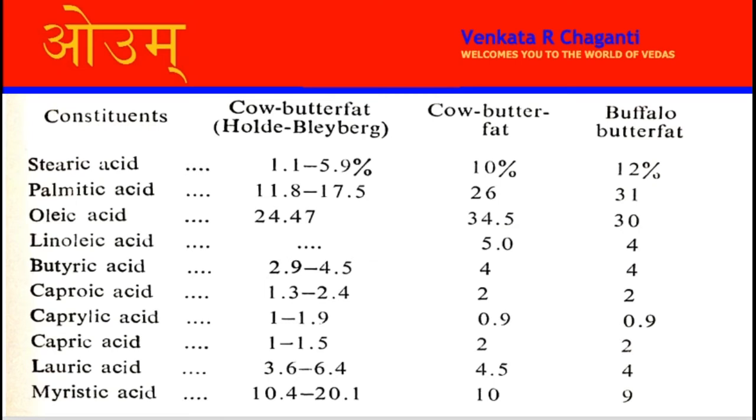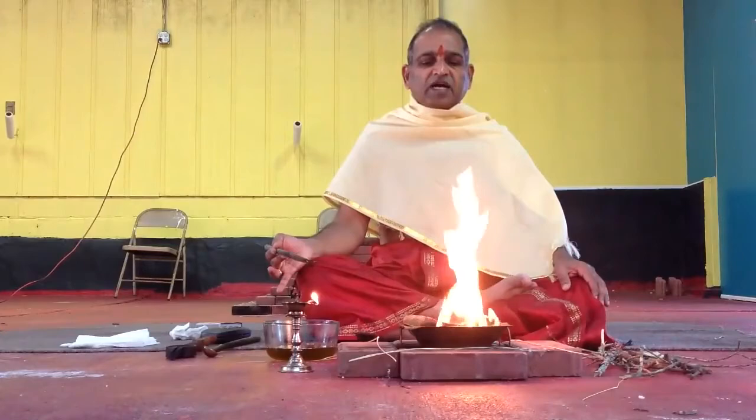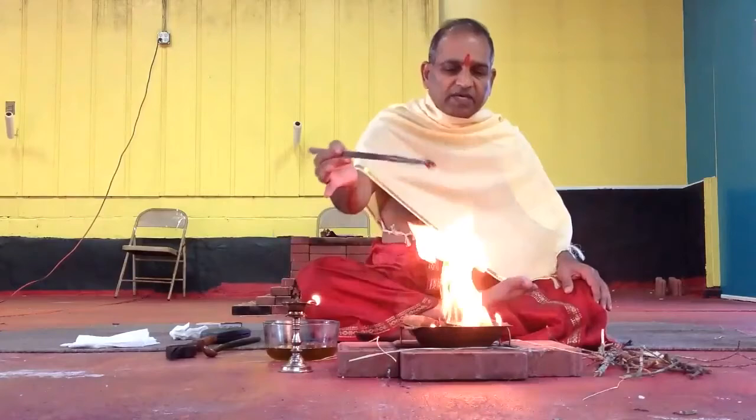Cow butter fat and buffalo butter fat contain the same fatty acids as the oils used in soaps. Ghee, when offered in the fire, is converted into vapor and enters into our lungs and cleans the virus just like soap cleans our hands of the virus, because both of them contain common fatty acids.